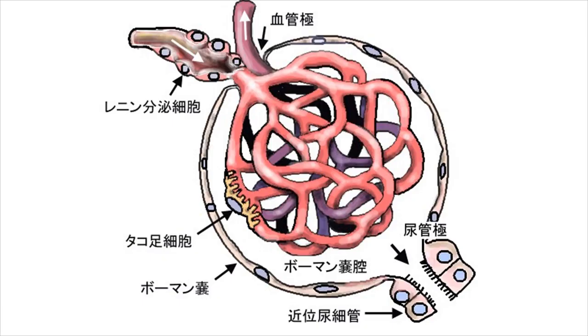In addition, the kidney also helps to maintain the fluid and electrolyte balance of the body, osmotic pressure, retain plasma constituents like glucose, amino acids, etc., and to regulate blood pH.